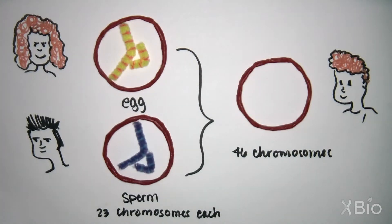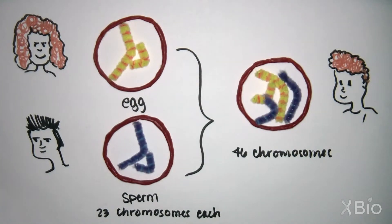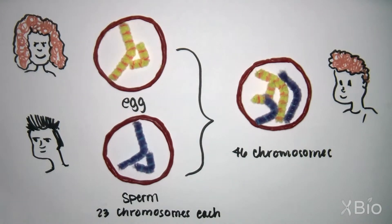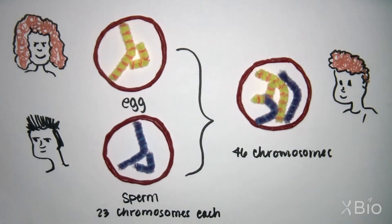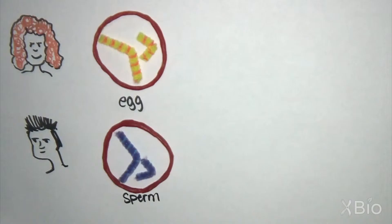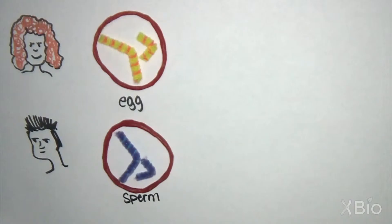When the egg and sperm fuse, they produce a fertilized cell which has 46 chromosomes, one copy from your mother and one from your father. So how do gametes end up with only half the number of chromosomes? That's where meiosis comes in.